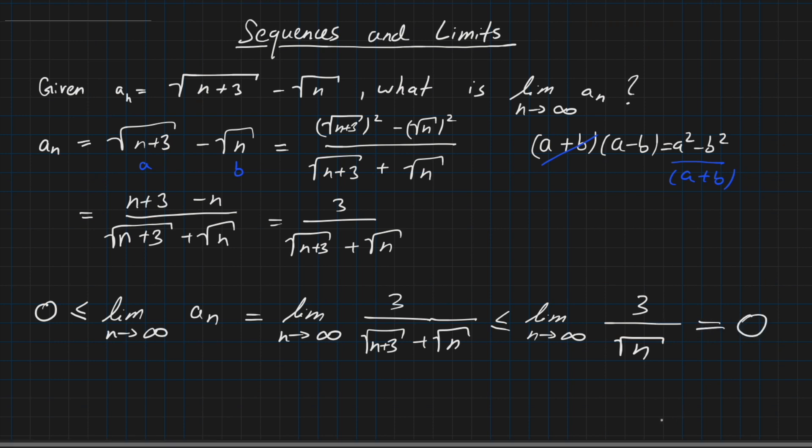What we have here now is the following chain of implications. We have zero smaller or equal than the limit of a_n where n tends to infinity, and this is smaller or equal than zero. So it follows that the limit where n tends to infinity of a_n is exactly zero.